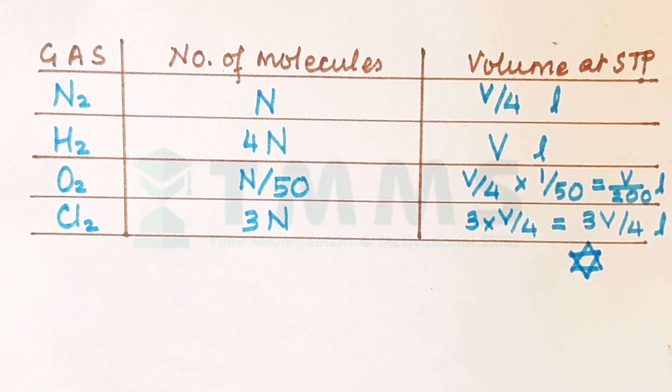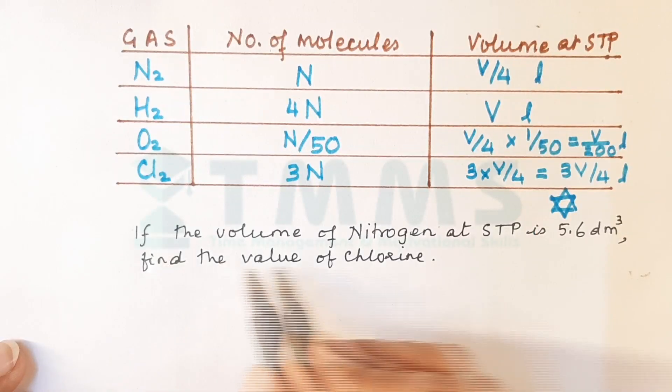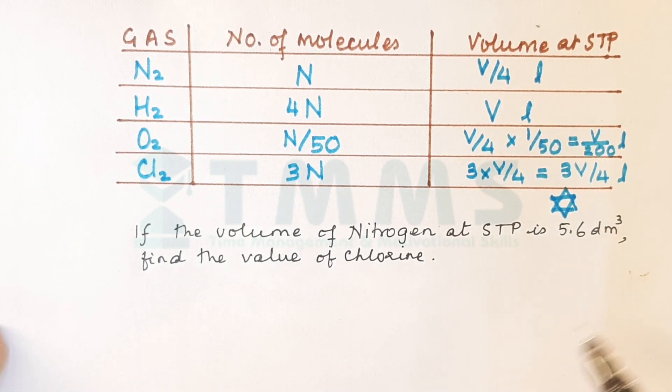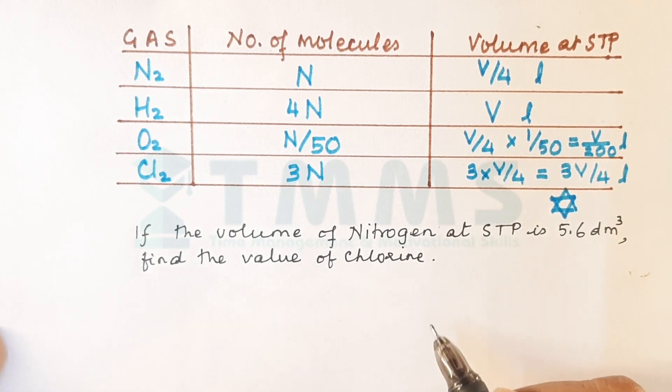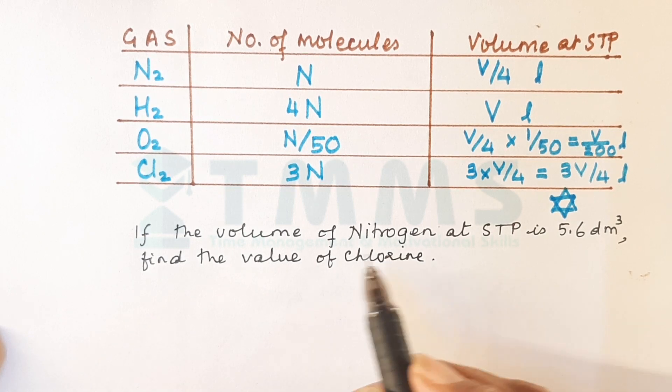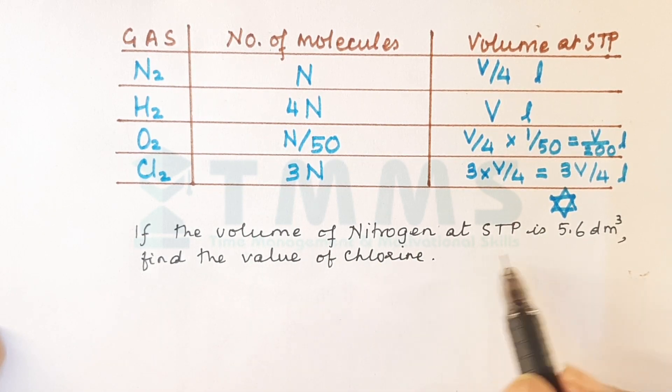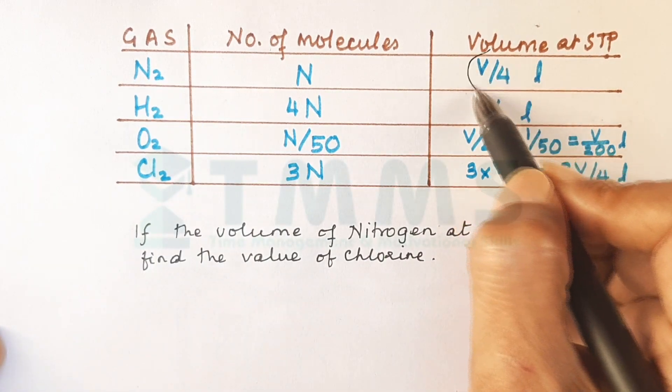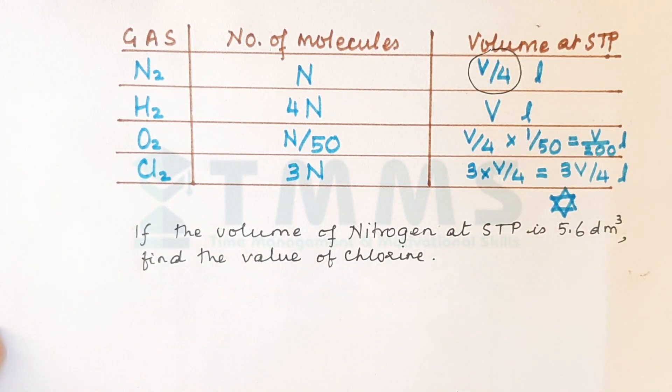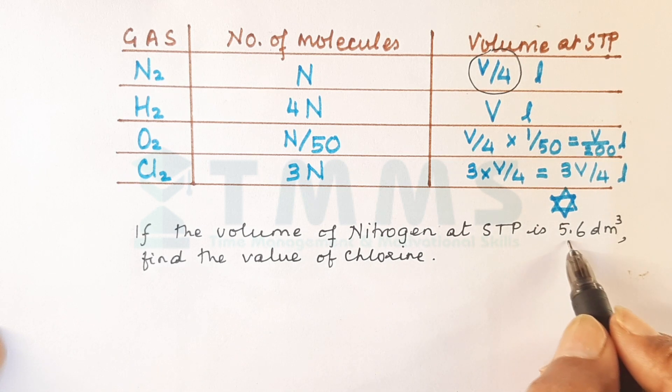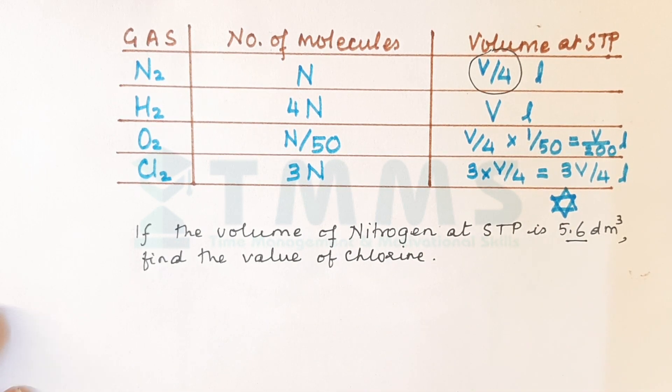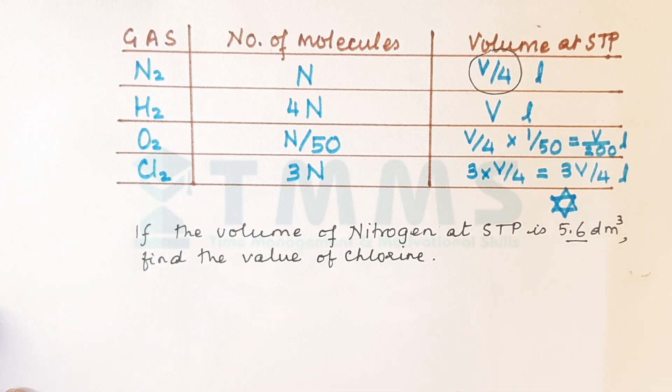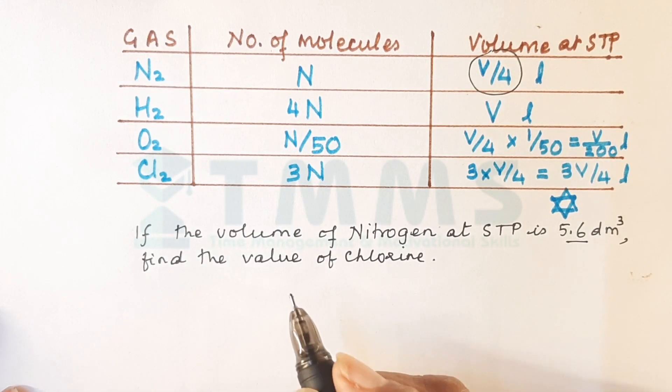Now let us see a little more variation of this. If the volume of nitrogen at STP is 5.6 DM cube, find the value of chlorine. Now what is the volume of nitrogen at STP? The volume of nitrogen is V upon 4 liters and that is 5.6 DM cube. And so they are asking what would be the volume of chlorine?